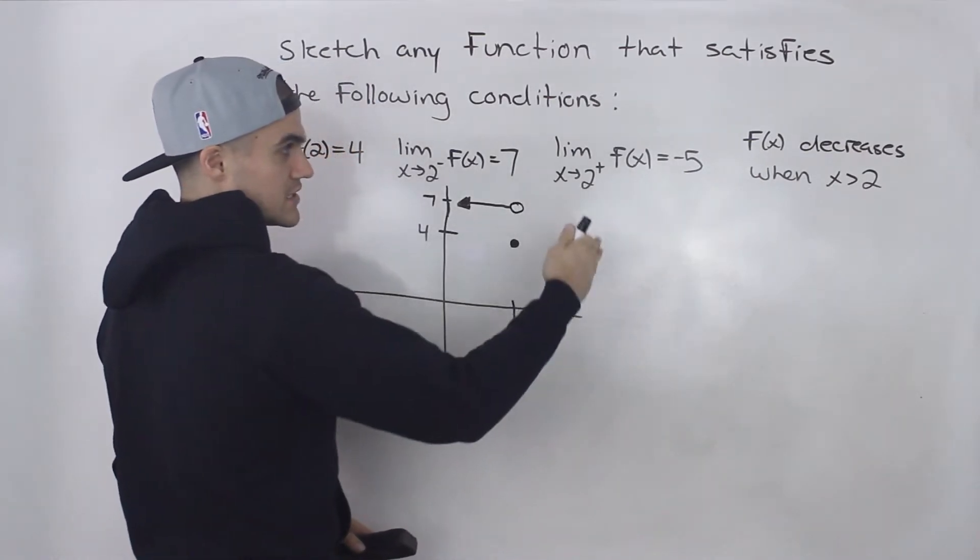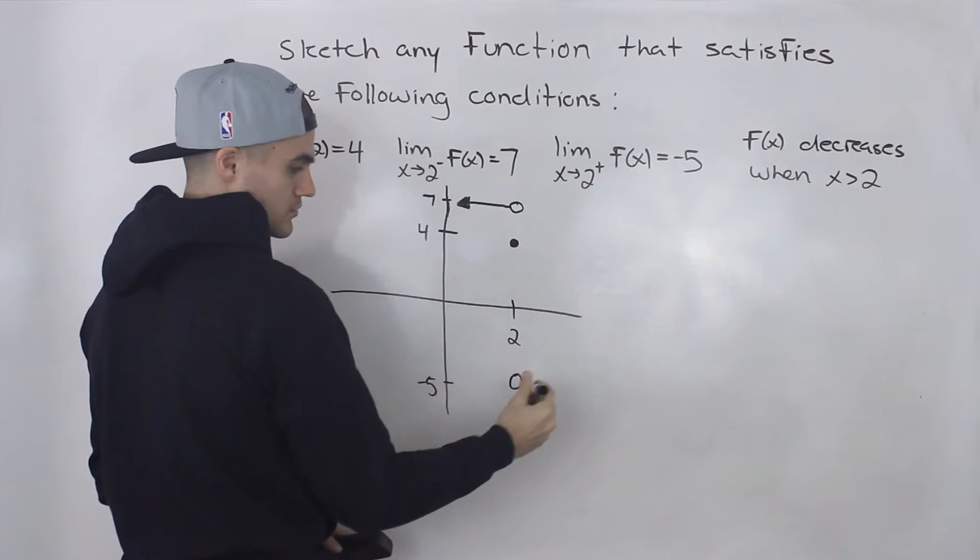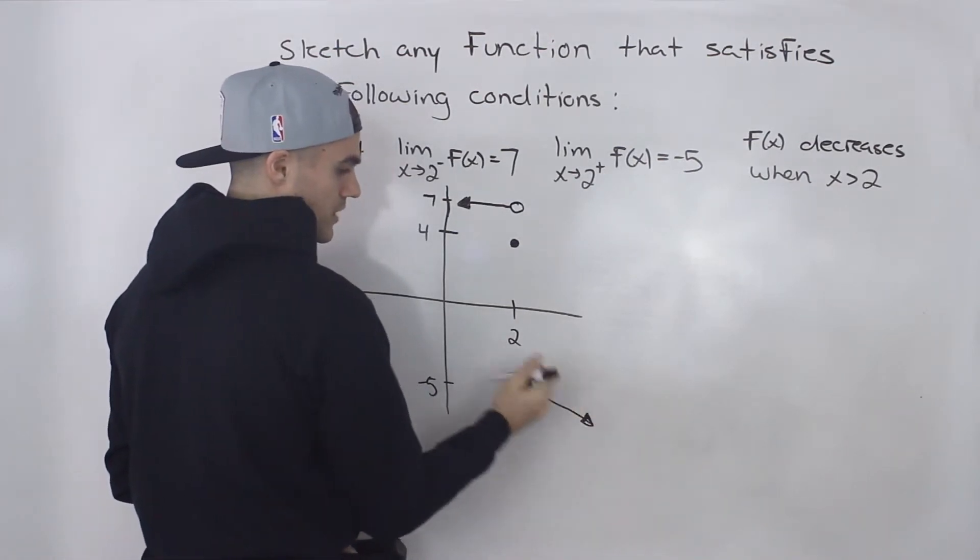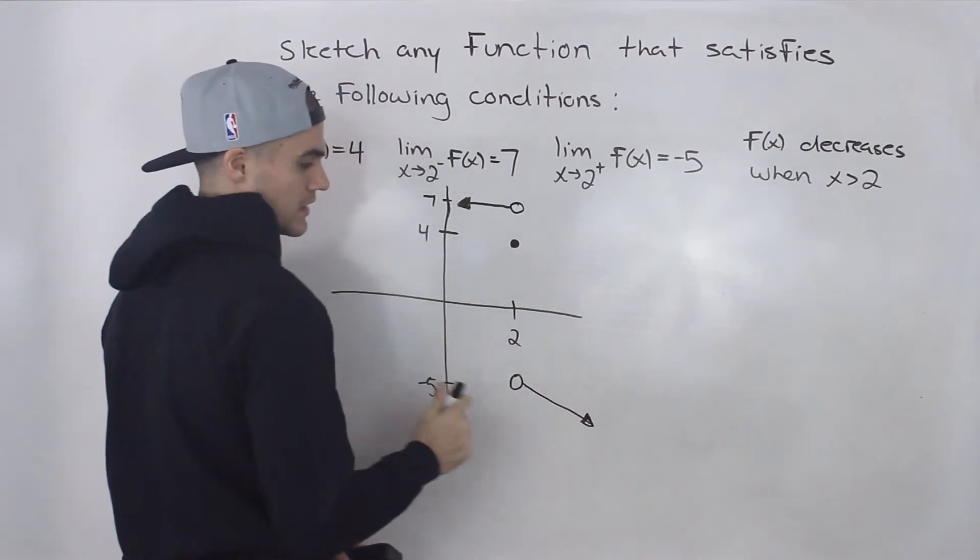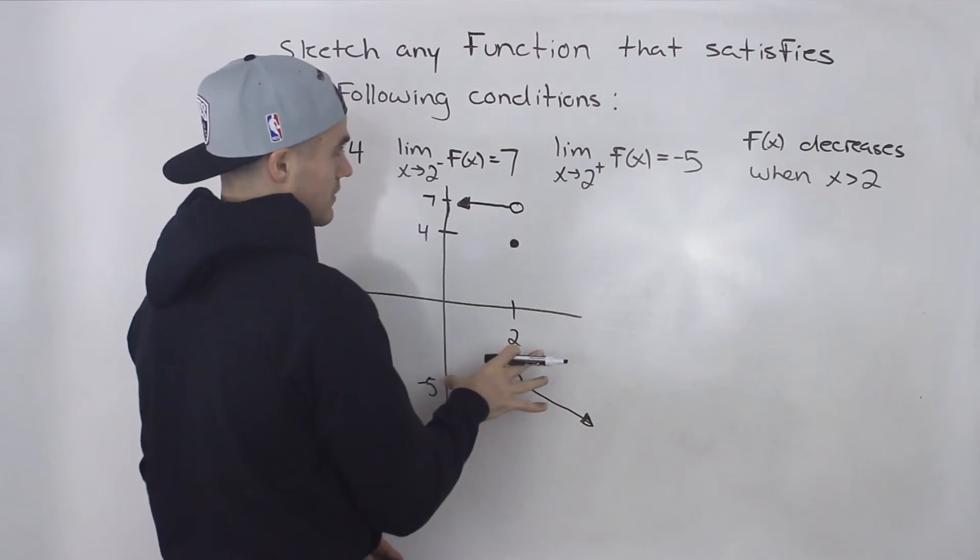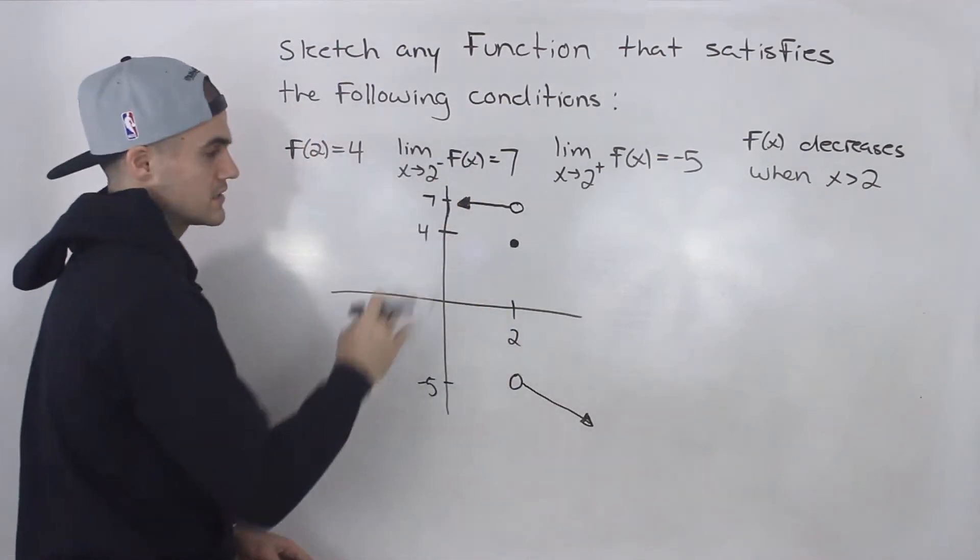And we're also told that f(x) decreases when x is greater than 2. So if it's decreasing, if we read from left to right, the y values are going down. So let's draw a downward sloping line. And this satisfies all of these conditions.